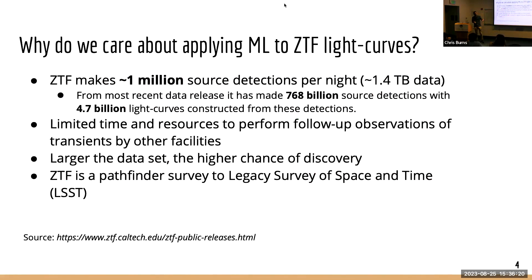So why do we care about applying machine learning to ZTF light curves? Well, ZTF issues around 1 million alerts every night. From its most recent data release it has made about 768 billion source detections and constructed about 4.7 billion light curves from these single exposure detections. Since there's both limited time and resources available to perform follow-up studies on all of the sources coming out of ZTF, it is important to develop a framework and machinery to prioritize what sources should be followed up by other facilities.